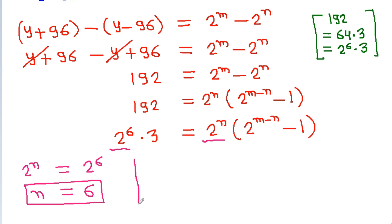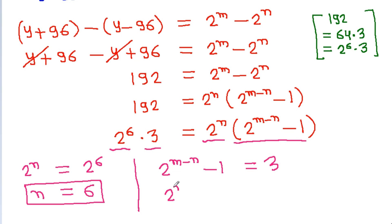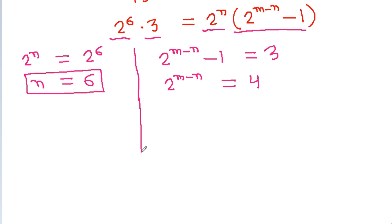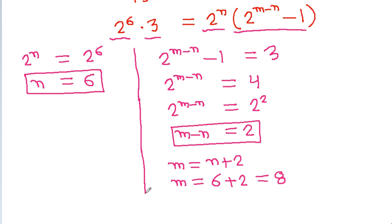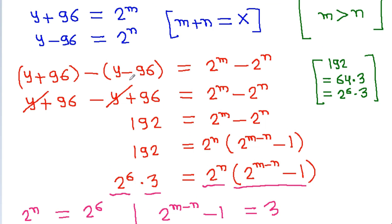Then 2^(m-n) minus 1 equals 3, so 2^(m-n) equals 4, meaning m minus n equals 2. Therefore m equals n plus 2 equals 6 plus 2 equals 8. Since y minus 96 equals 2^n equals 2^6 equals 64, we get y equals 64 plus 96 equals 160.